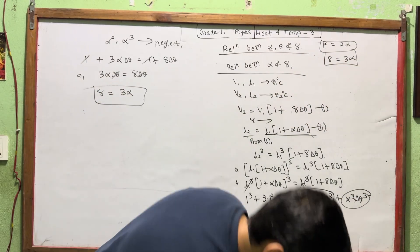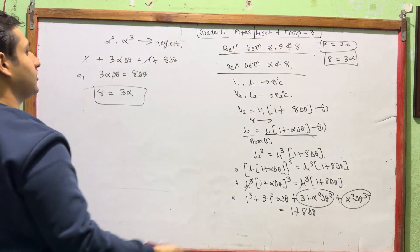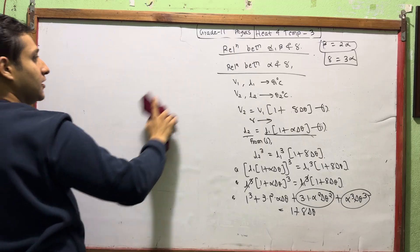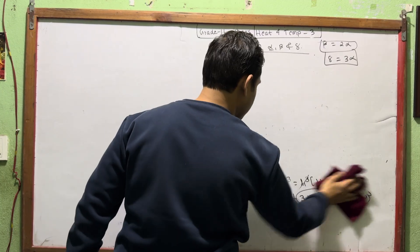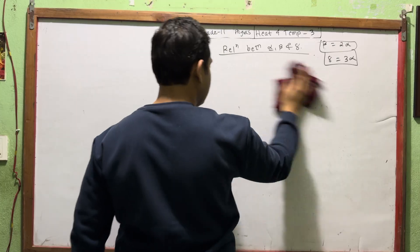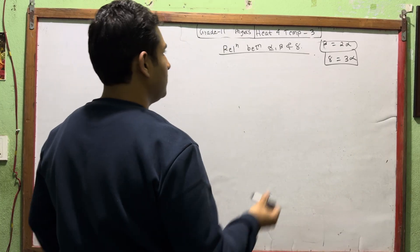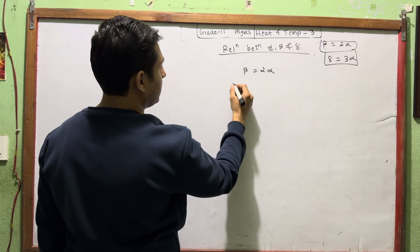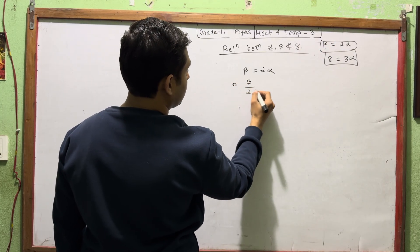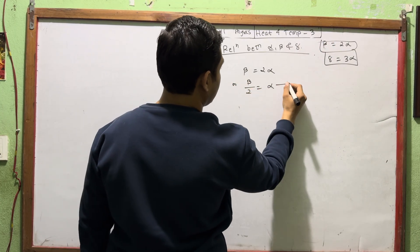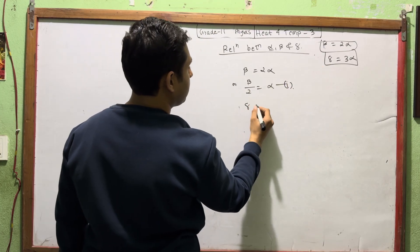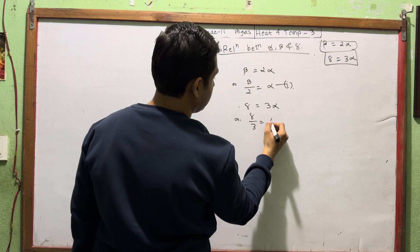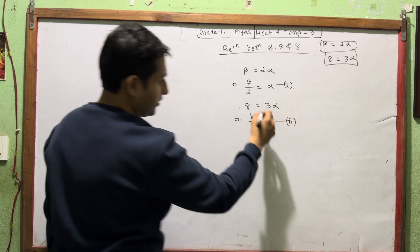So in summary: beta is equal to 2 alpha, which means beta divided by 2 equals alpha. And gamma is equal to 3 alpha, which means gamma divided by 3 equals alpha. These are the three relationships between the coefficients of linear, area, and volumetric expansion.